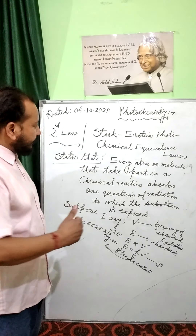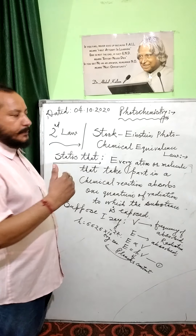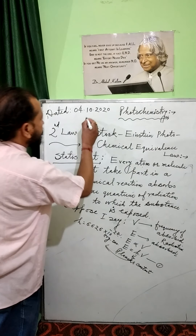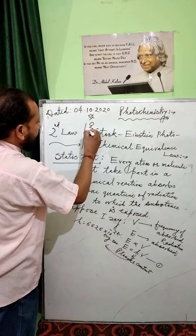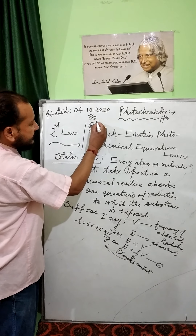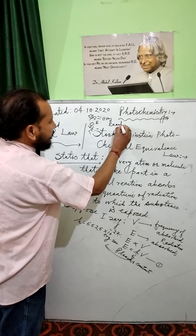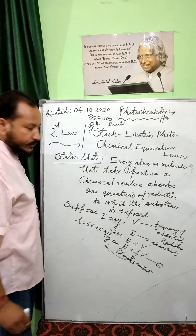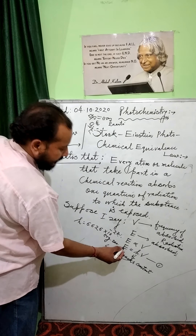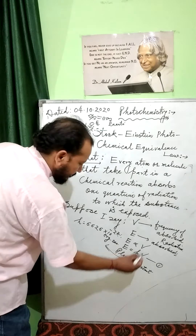Now I will tell you Planck's hypothesis. The energy that we receive from the sun comes in the form of bundles or packets. These bundles or packets are called quanta. So if E is the energy absorbed and ν is the frequency of light, then E is directly proportional to ν, and E = hν, where h is Planck's constant.